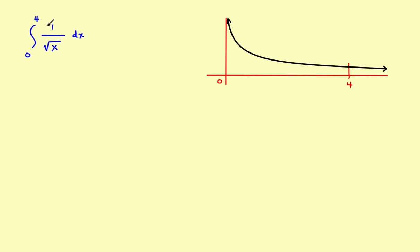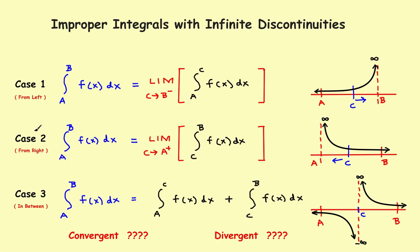The problem: suppose you want to evaluate the integral from 0 to 4 of 1 over the square root of x. If you let x equal 0, you have division by zero, so you have an asymptote at x equals 0 on the left-hand side. As the graph gets closer and closer to 0, it goes off toward positive infinity — an infinite discontinuity. This falls into case 2.